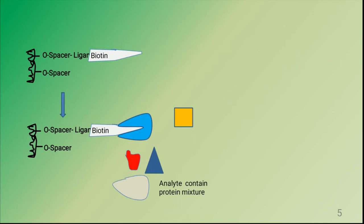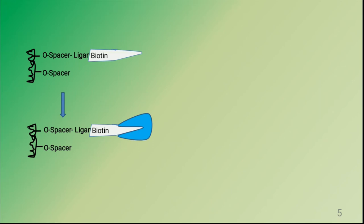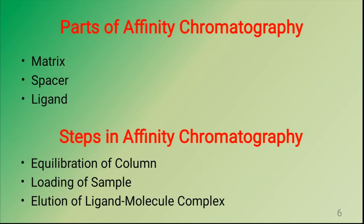After two or three washing steps, the remaining unbound proteins are washed out and only the target protein stays with the column. The key parts of the solid phase are the matrix, spacer, and ligand. The key steps to perform affinity chromatography are equilibration of the column, loading of the sample, and elution of the ligand-molecule complex.